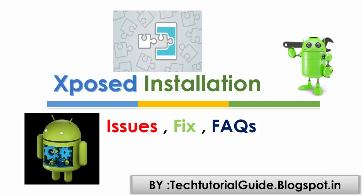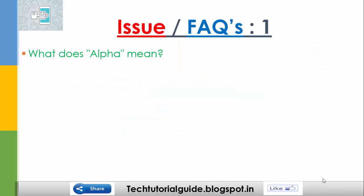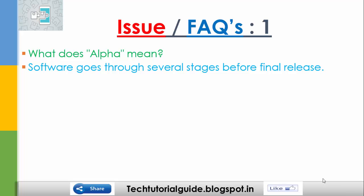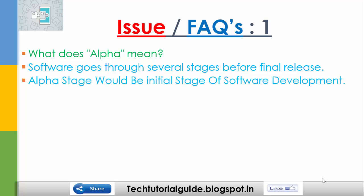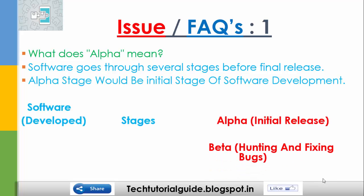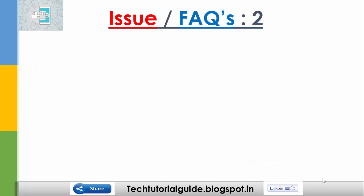First we want to know what 'alpha' means — it will be the initial release during software development. We have two stages during software development: alpha and beta. Alpha will be the initial release and beta will be to fix bugs, and then after that it will be sent to the public.